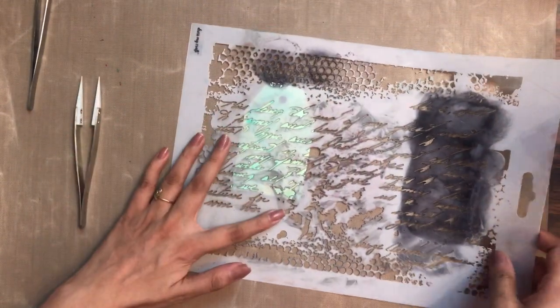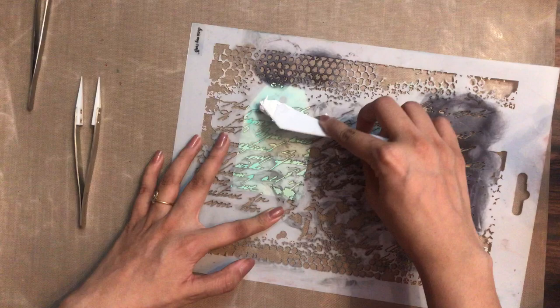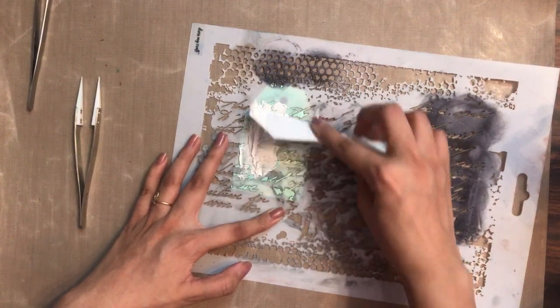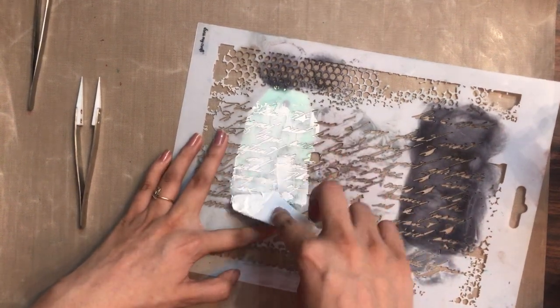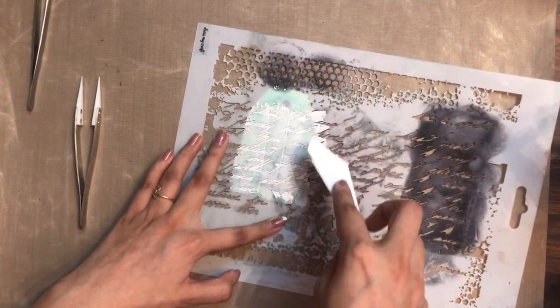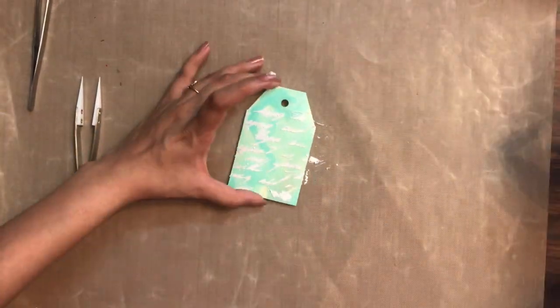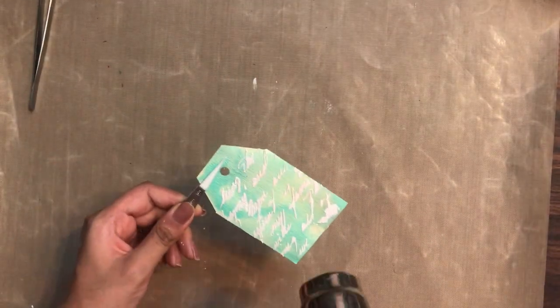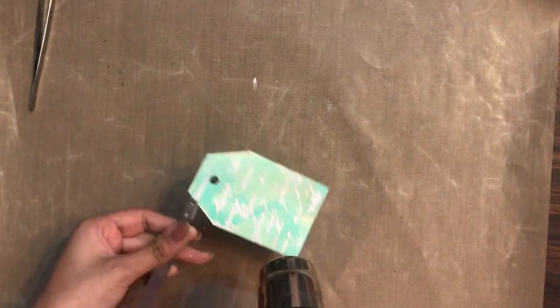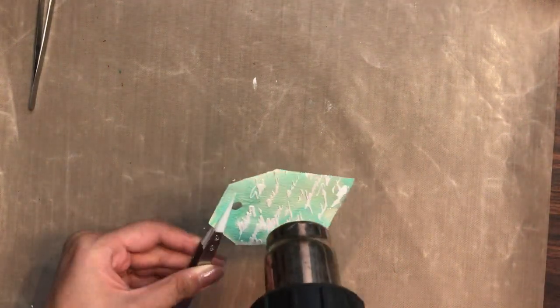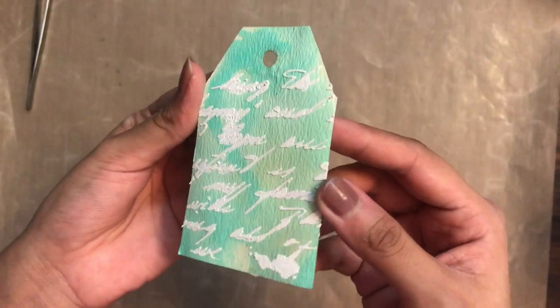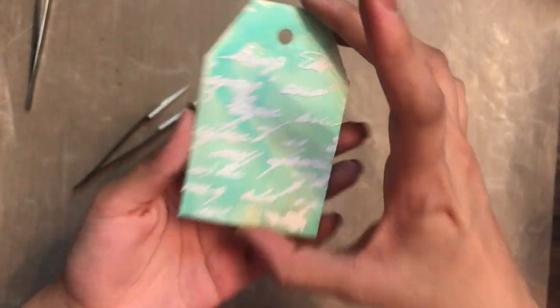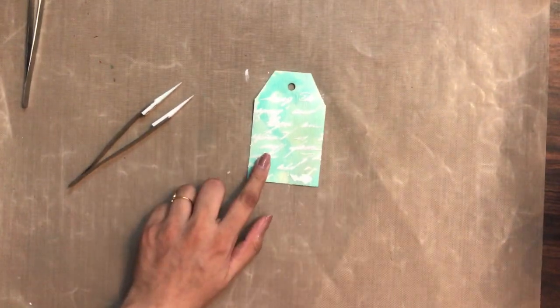For the next step, I'm going to add some textures. For that I'm using the Dress My Craft vintage script stencil, and using texture paste I am simply adding it onto my tag base. Now you can see this is how it looks after I applied a layer of texture paste, and now I will again heat set it. Can you see how useful these heat resistant tweezers are to hold onto your project so that you can heat set them?